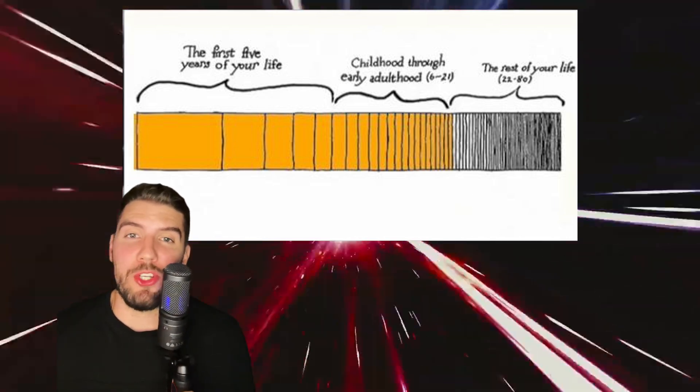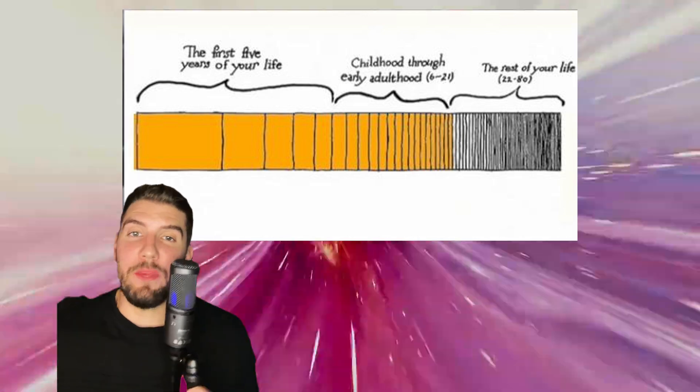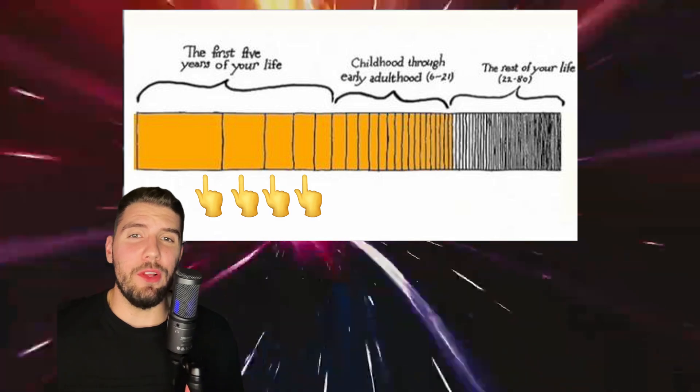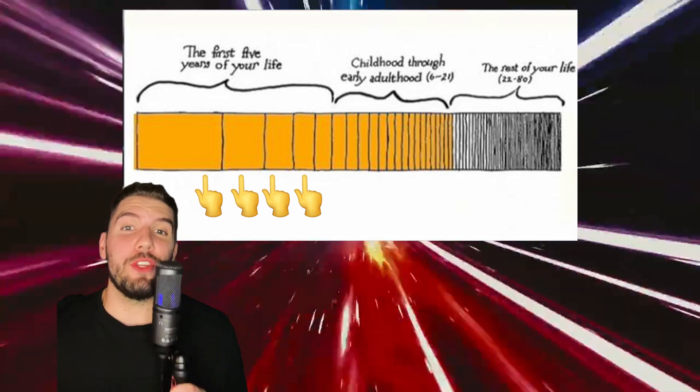And each year, your brain needs to choose which memories to delete in order to make room for new ones. Meaning, as we age, we slowly forget the most significant memories of our lives, making us feel like we got to where we are today faster than we actually did.